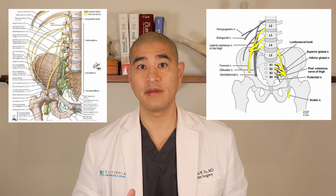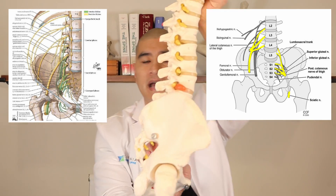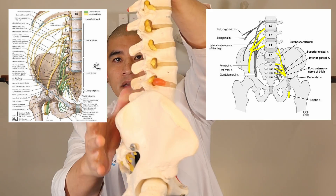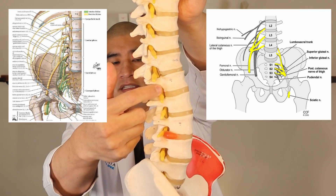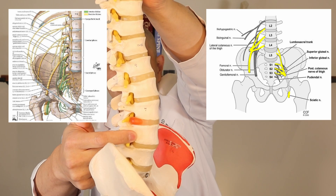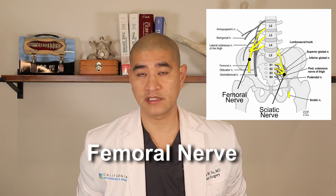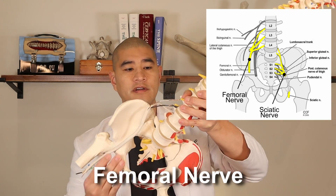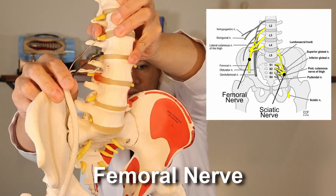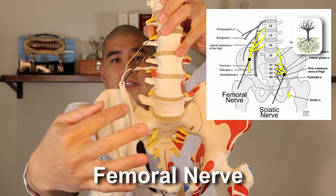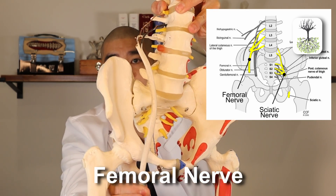All the nerves coming through the buttock down the leg come from the lumbar spine or low back. Here's the model — there's your back, your buttock, your belly, and here in the lumbar spine you'll see these yellow individual nerve roots that exit the spine. There are two main nerves that come down the leg: one is called the femoral nerve, one's called the sciatic nerve. The femoral nerve is composed of nerve roots from the upper lumbar spine that come together like an upside-down tree to form a trunk, and this nerve goes down the front of the leg through the thigh.